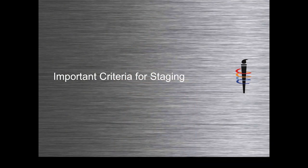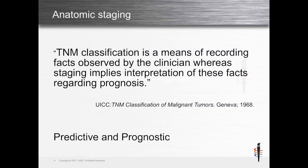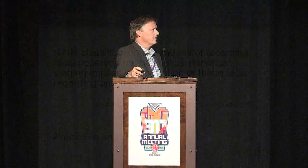So important criteria for staging. The TNM classification was not just recently invented — this has been going on for greater than 50 years. Initially it was developed as a classification scheme so we could have a discussion about anatomic variability of different tumors. The TNM classification is what the clinician is recording about the tumor, and the staging system is what is supposed to correlate to prognosis.